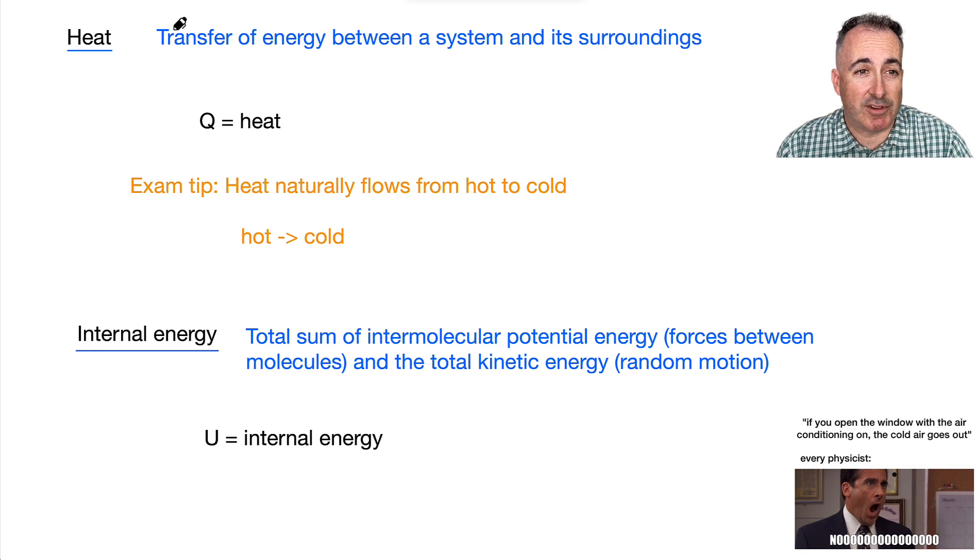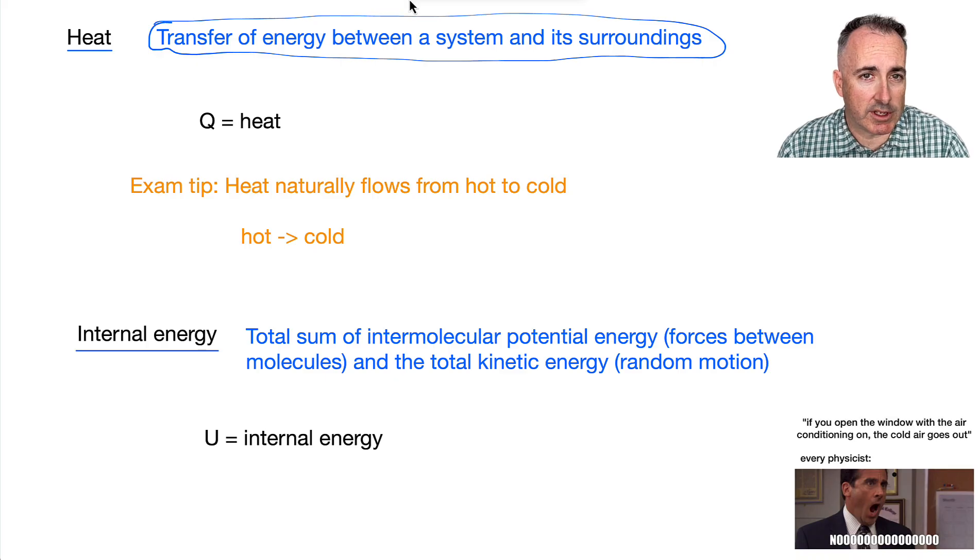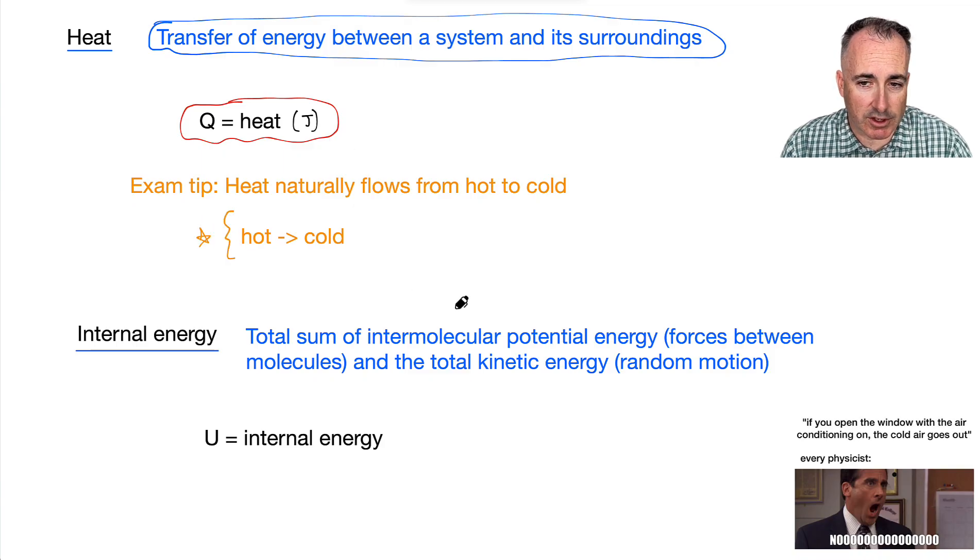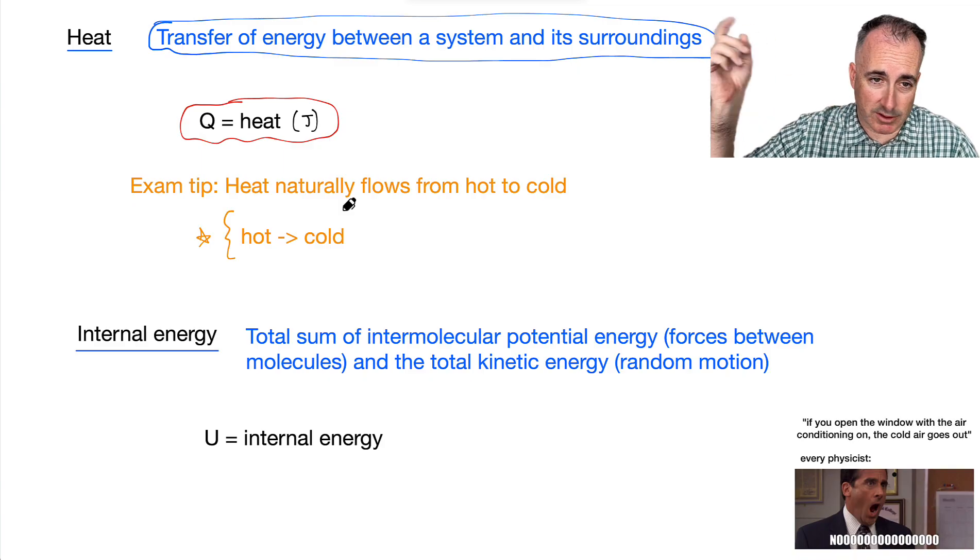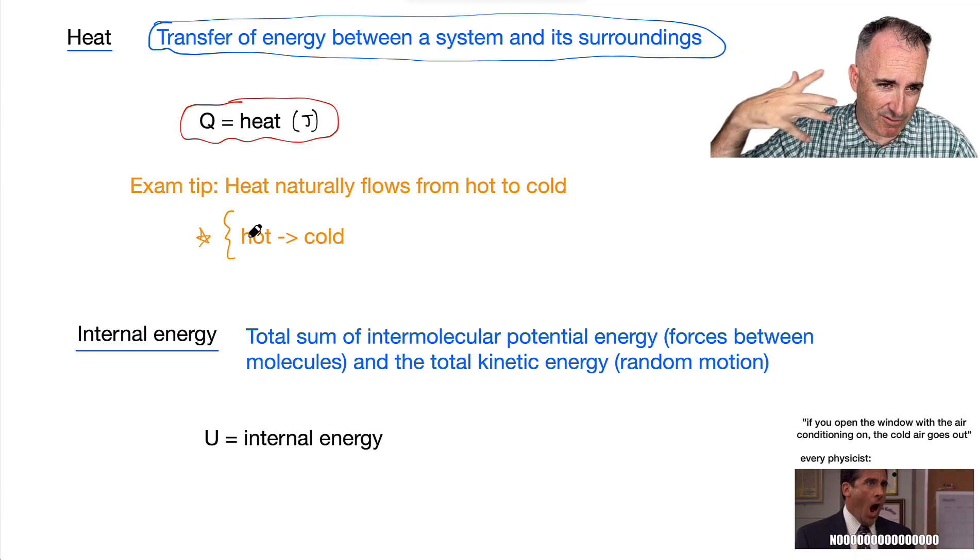Okay, so now we have the definition of heat, and heat is a transfer of energy between a system and its surroundings. And you need to know this right here, that Q is a letter that we used to denote, or the variable we used to denote heat. And heat, so Q equals heat, it's measured in joules. And things naturally flow from hot to cold. This is a really important piece here to know. So, that's why I put this little joke right here. That's because, I mean, naturally, heat just flows from hot to cold. It doesn't go from cold to hot easily. You have to kind of force it. So, naturally, things go from hot to cold.